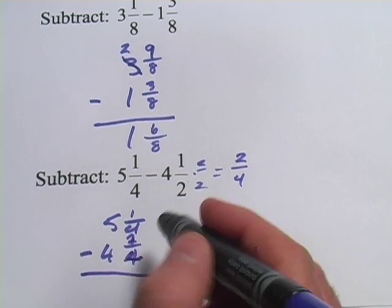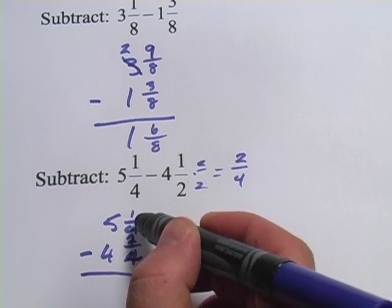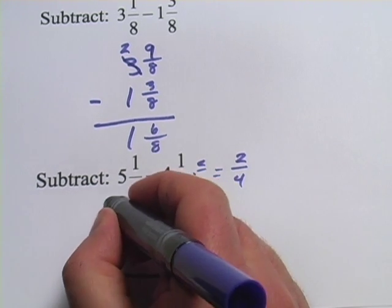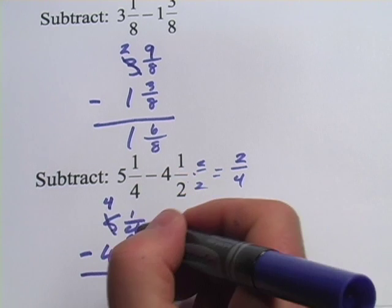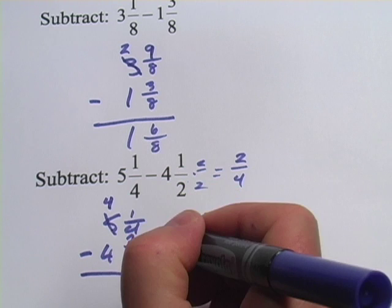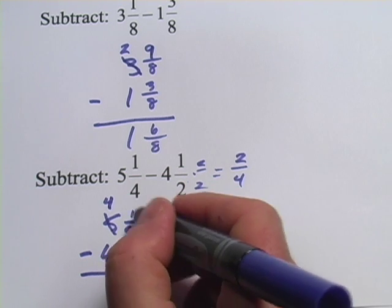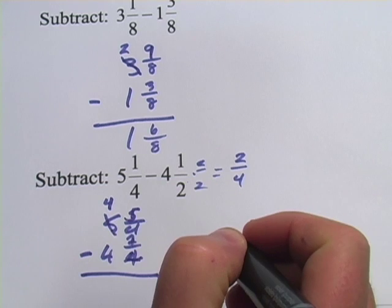Now we can do our subtraction. One-fourth minus two-fourths, well, one-fourth is smaller than two-fourths, so we'll have to borrow. That becomes, that five goes down to a four. And now, since we're in fourths, it's four-fourths that we add here. So it's four-fourths plus the one-fourth that's already there, five-fourths.